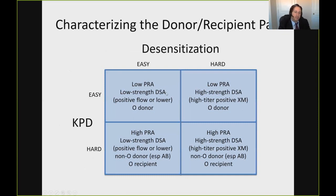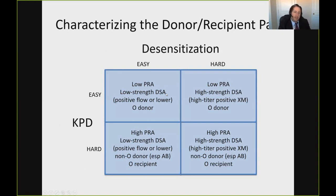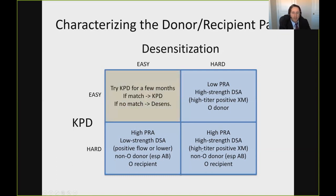In conclusion for this first lecture: the incompatible pair has a donor that cannot donate directly to the recipient. The two major options are desensitization — with more risk as donor-specific antibody strength increases, but still showing strong evidence of a survival benefit — and kidney exchange, which is great if you can find a match. We've reduced limitations by allowing non-directed donors and compatible donors to participate, to make kidney exchange available for as many people as possible.